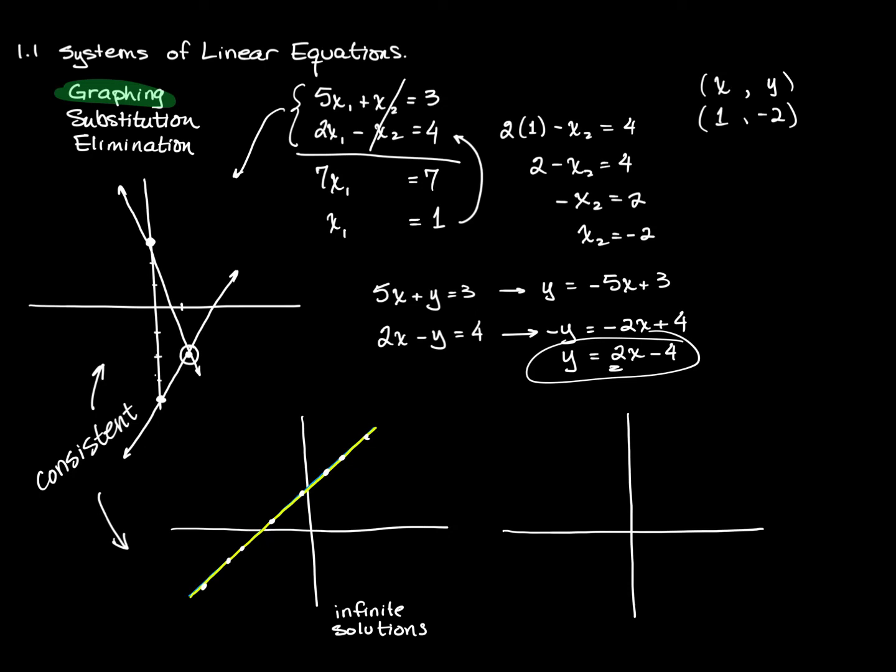There's at least one. Sometimes there's infinitely many. There are never two, by the way. There's either one or there's an infinite number, right? A consistent system of equations has at least one solution, possibly infinite solutions.